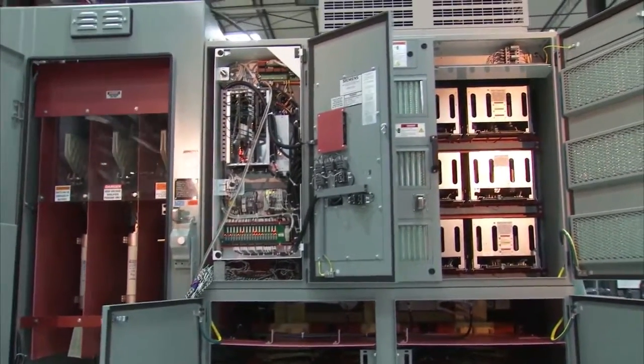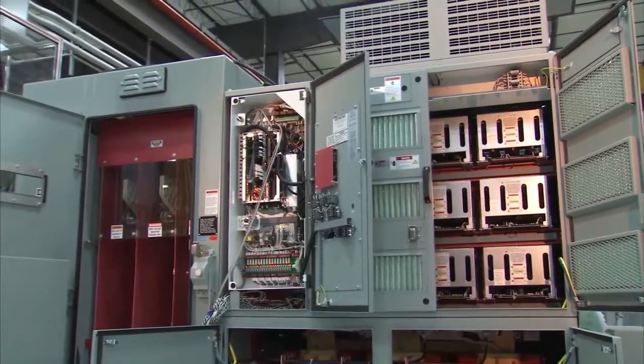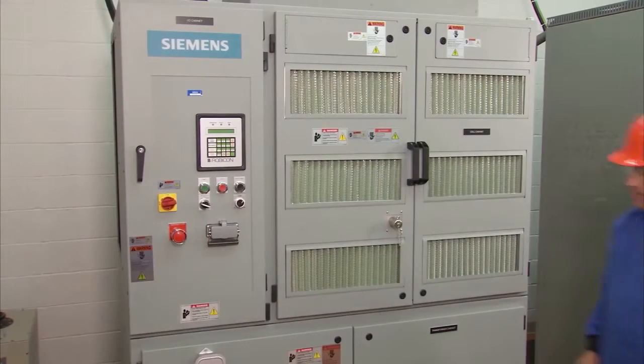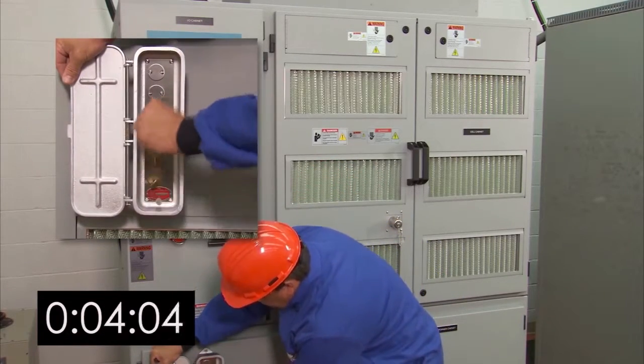Once medium voltage power has been removed and the K1 key is extracted from the medium voltage switchgear, first install the K1 key in the key transfer box. This will allow you to extract the top K2 key.